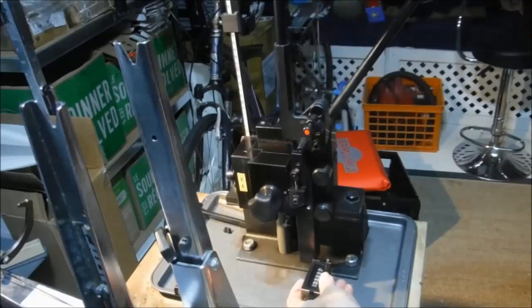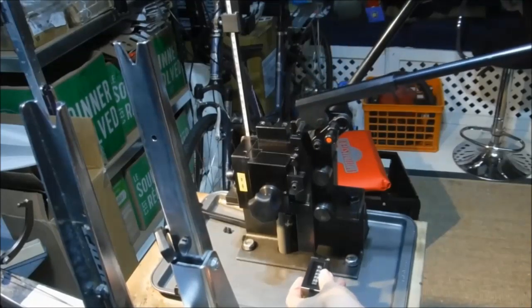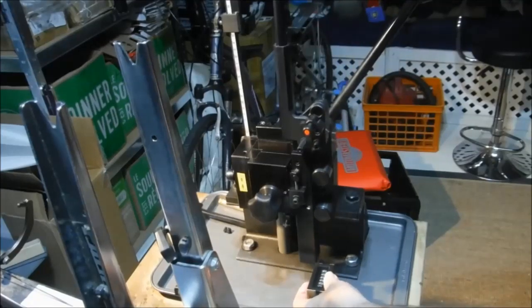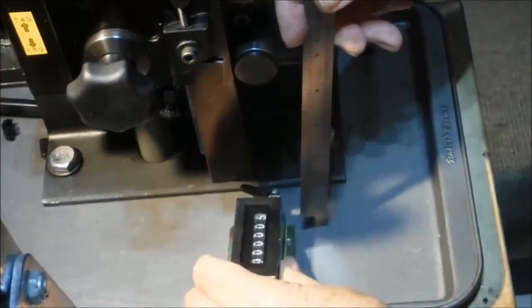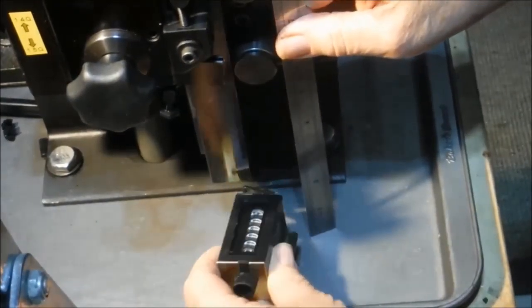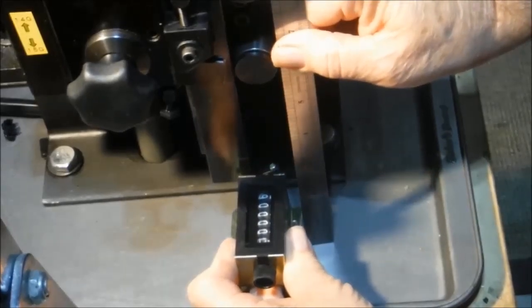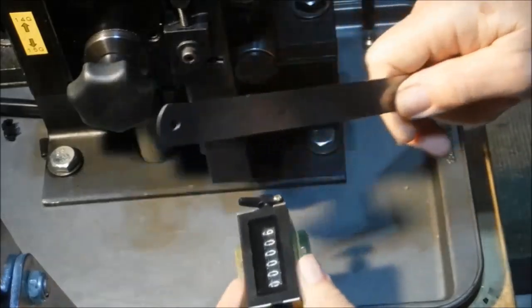The trick will be to mount it at the right level so that it activates the counter. As I measure it here, it looks like an inch and a quarter is exactly the height we need to block it up to have the movable die actuate the counter.